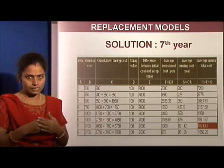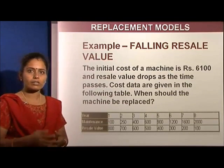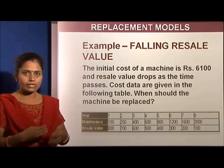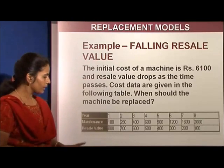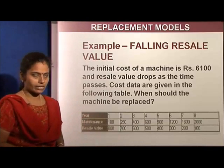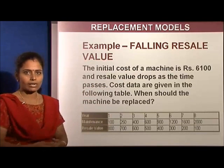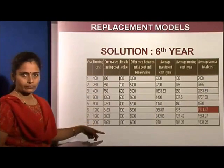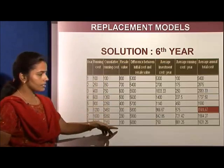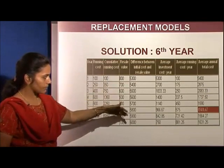The second model is the falling resale value model. In the previous model the scrap value was constant at 100 for all eight years. If the resale value changes, how do we deal with it? In this problem, the maintenance cost differs each year and the resale value declines every year. The initial cost of the machine is 6,100. We need to calculate at what year to replace the machine. The cumulative running cost is calculated and the resale value is taken as given in the problem.